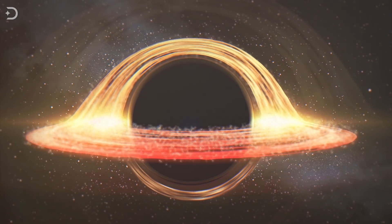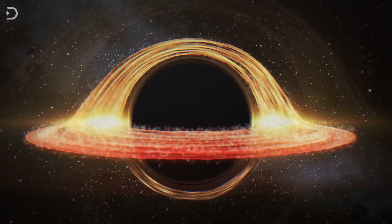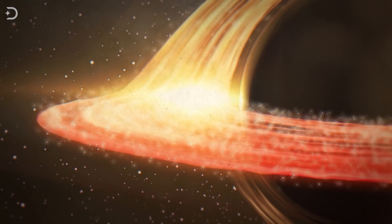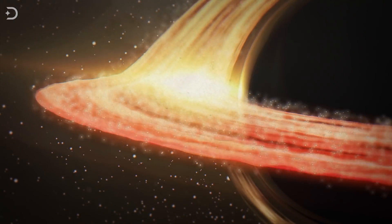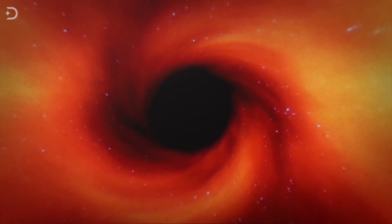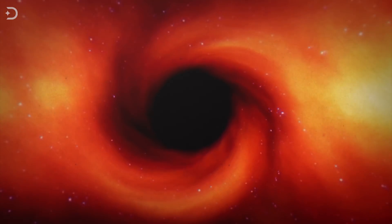This same team is now working on trying to image the supermassive black hole at the center of our own galaxy, Sagittarius A star, which is 4.1 million times the size of the Sun. However, therein lies a great mystery, because for some unknown reason, the ring of fire around the black hole at the heart of the Milky Way is smaller and dimmer.